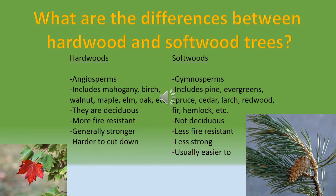First, I'm going to talk about the differences between hardwood and softwood trees. Hardwoods are angiosperms, which means they have a hard shell cover on their seeds. They're not called hardwoods because of how dense they are, because one of the least dense species of trees are actually hardwoods.